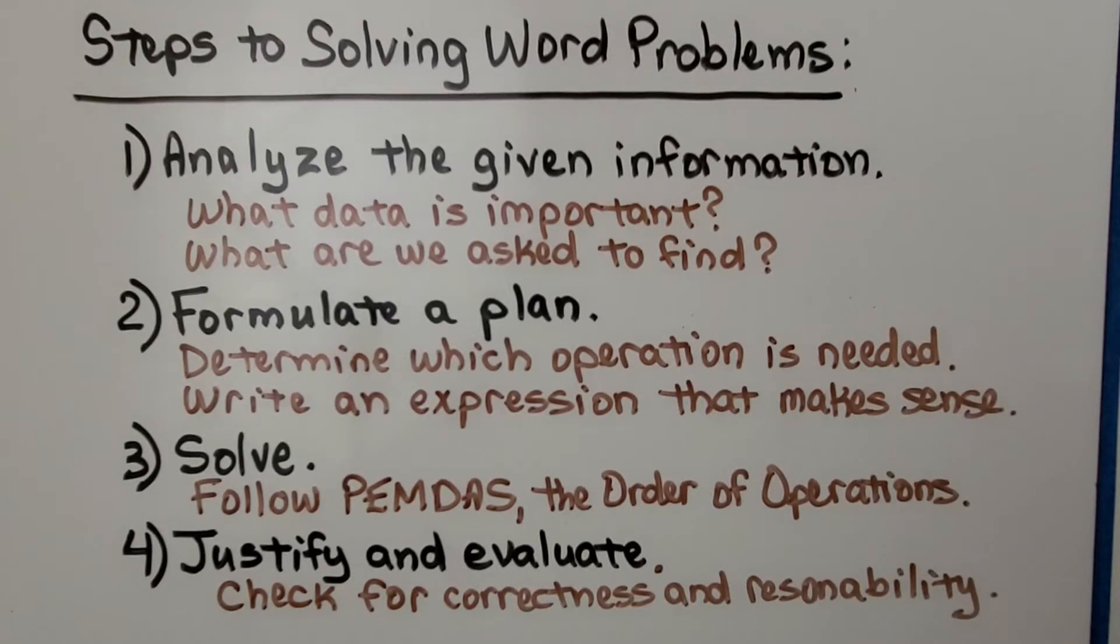The steps to solving word problems are: one, we analyze the given information. What data is important? What are we asked to find? Two, we formulate a plan. We determine which operation is needed. We write an expression that makes sense. Three, we solve that expression. We follow PEMDAS, the order of operations. And last, number four, we justify and evaluate. We check for correctness and reasonability.